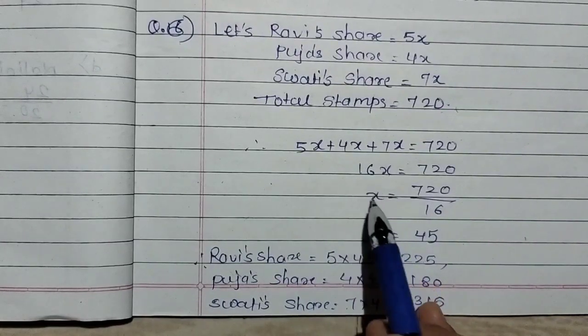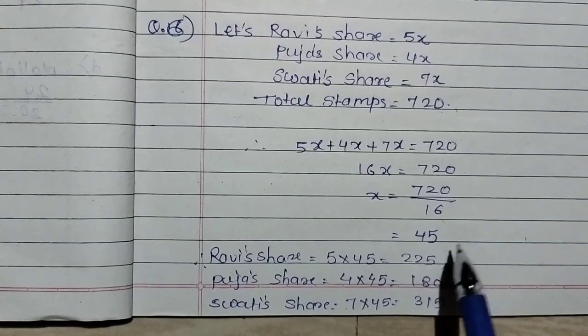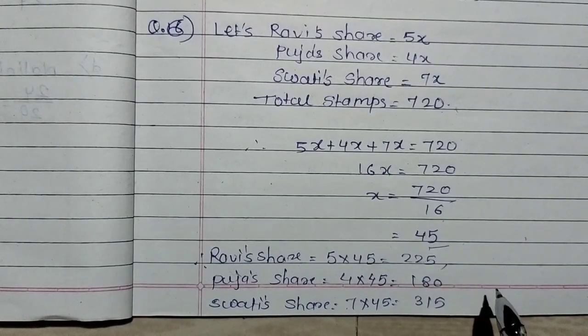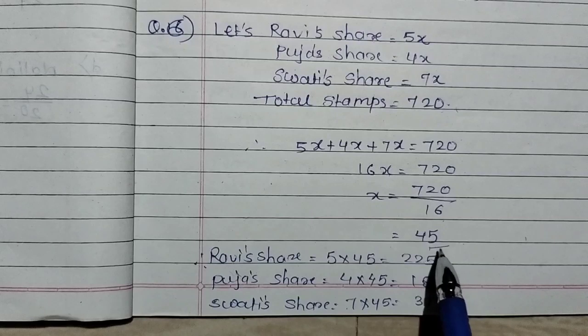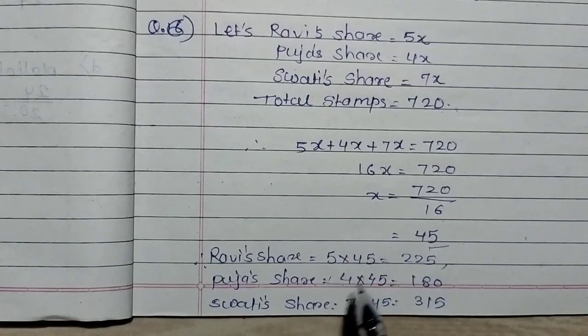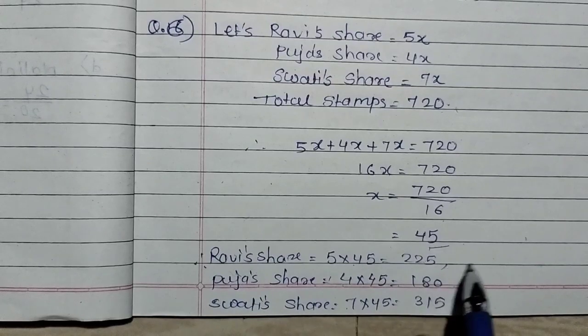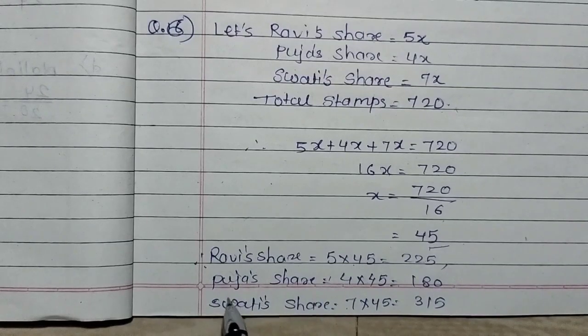The ratio is 5 is to 4 is to 7. So we add the ratio parts: 5 plus 4 plus 7 equals 16. So we write 5x plus 4x plus 7x equals 720. This gives us 16x equals 720. x is multiplied, so it divides. We get x equals 45. So x value is 45. Ravi's share is 5x, so 5 into 45 equals 225 stamps. Pooja's share is 4x, 4 into 45 equals 180. Swati's share is 7x, 7 into 45 equals 350.